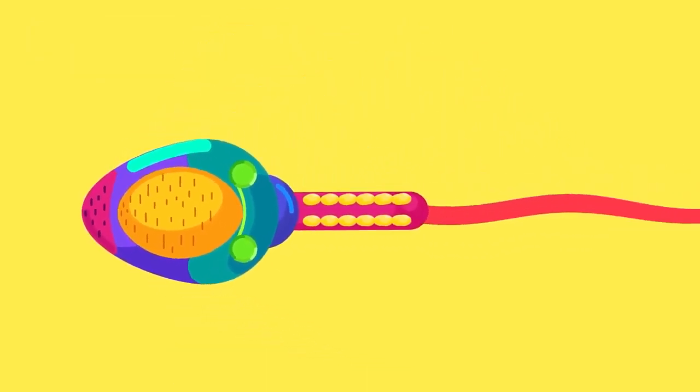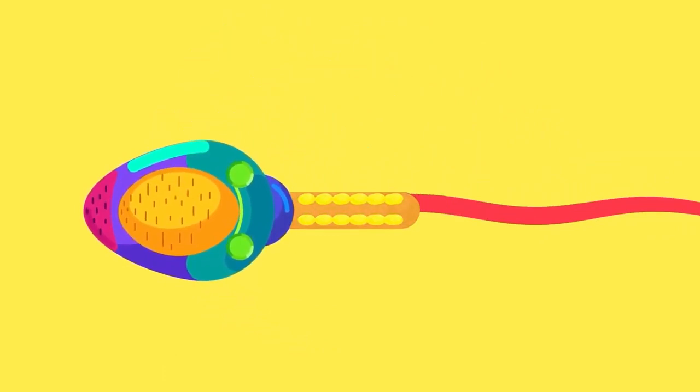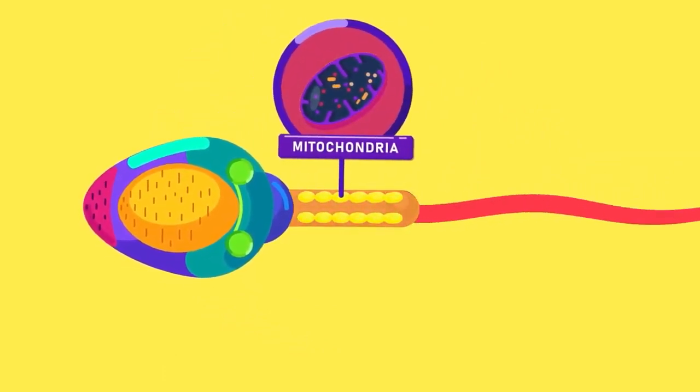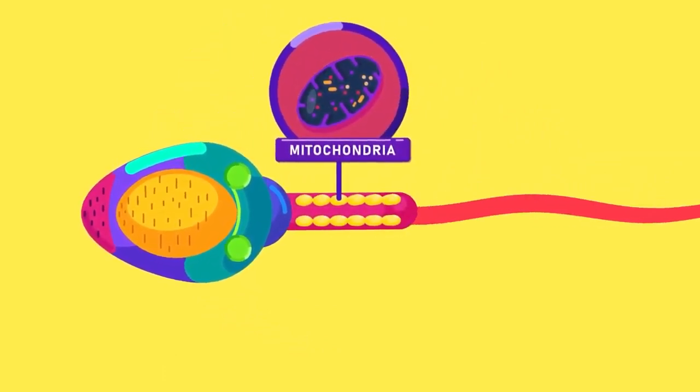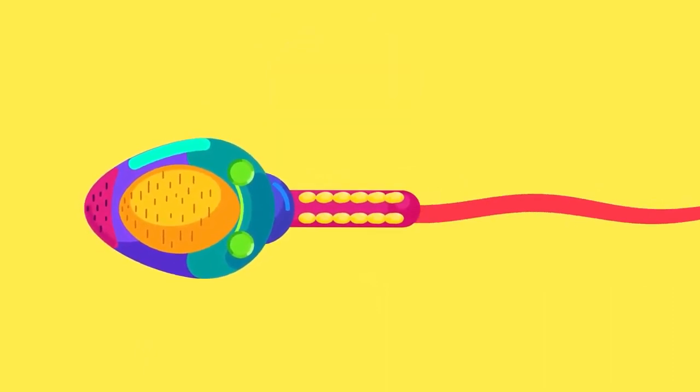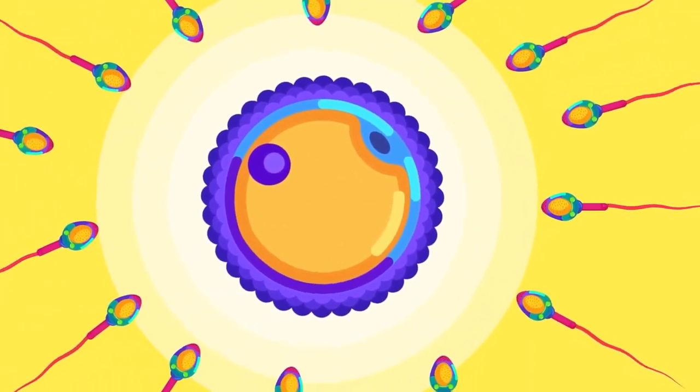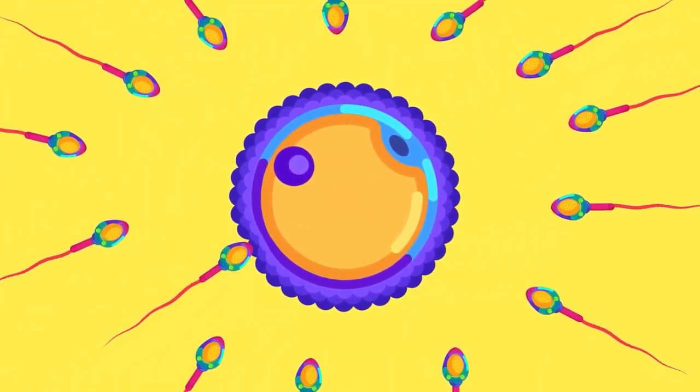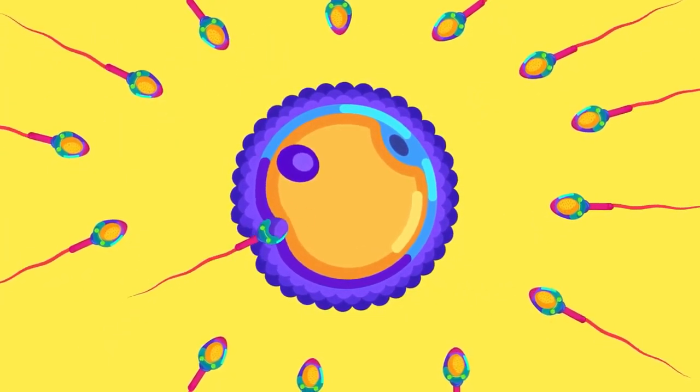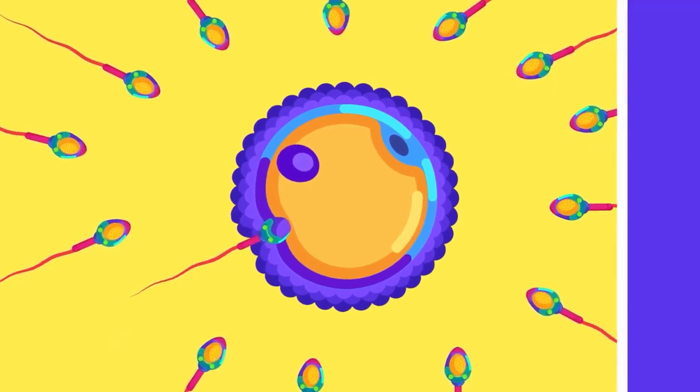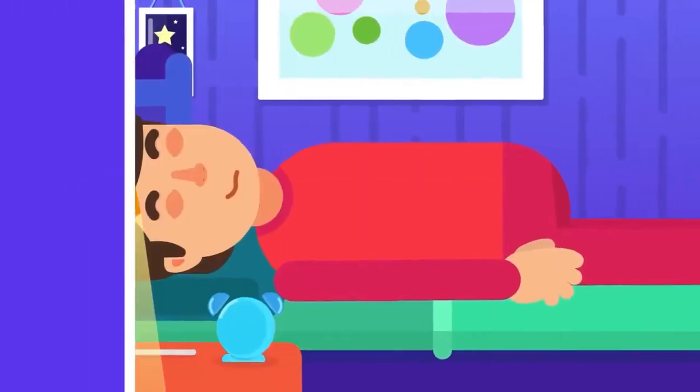The human sperm also includes a middle piece containing mitochondria to provide energy for the activity of the sperm and a tail or flagellum to enable the sperm to swim towards the egg. The enzymes can break down part of the egg membranes to let the sperm penetrate during fertilization.